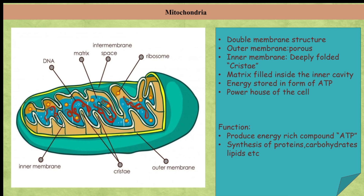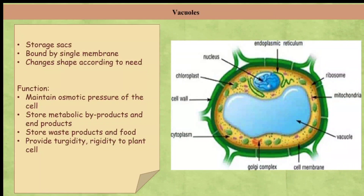The next organelle is vacuoles. Vacuoles are storage sacs for solid and liquid contents — they don't have any typical shape or size, and their structure changes according to the cell's needs. Vacuoles are bounded by a single membrane. Their functions include maintaining the osmotic pressure of the cell and storing metabolic byproducts and end products like glycogen, proteins, and water. In animal cells, vacuoles store waste products and food, while in plant cells they are full of cell sap and provide turgidity and rigidity.